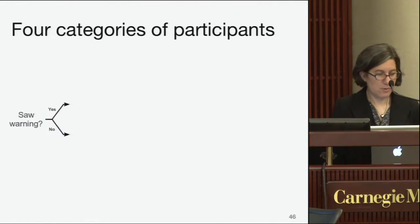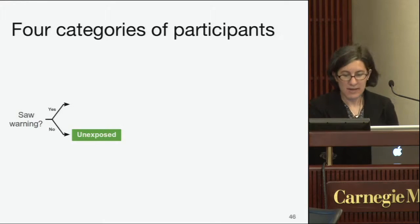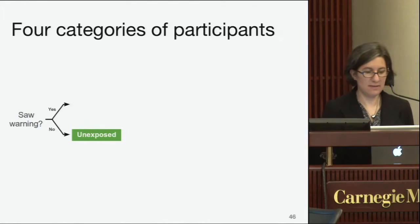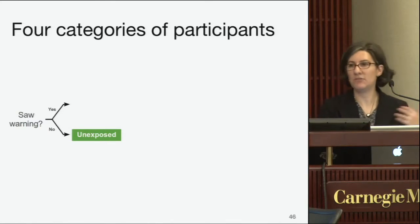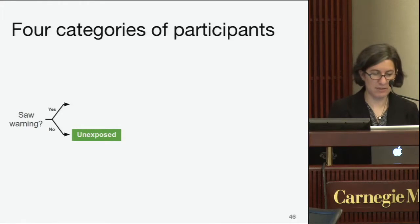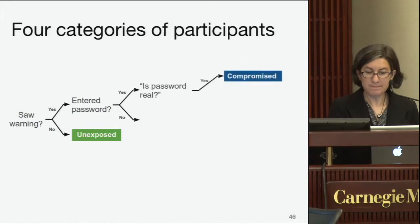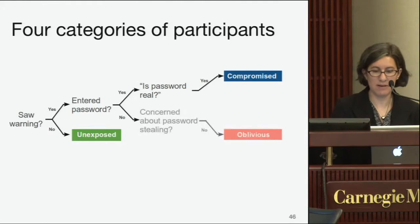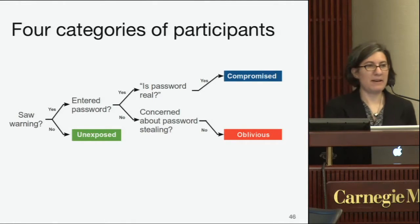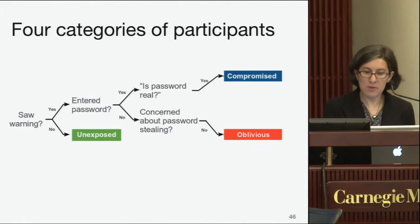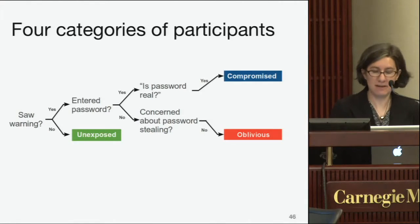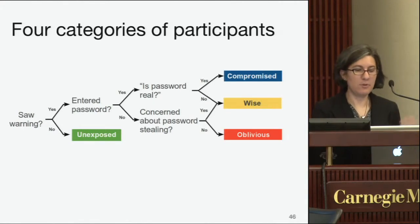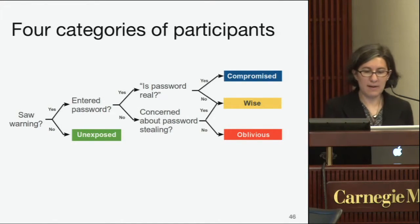Our results showed four categories of participants. First, those who were unexposed — they didn't see the dialogue, perhaps because they didn't click the game link or quit early. Of those who saw the password entry dialogue, some entered their real password — those are the 'compromised' group, the ones we're most worried about. Some didn't enter a password but only out of laziness, not suspicion — these are the 'oblivious' group, who also could have been compromised. Then there's the 'wise' group — those who entered a fake password or declined because they were suspicious.